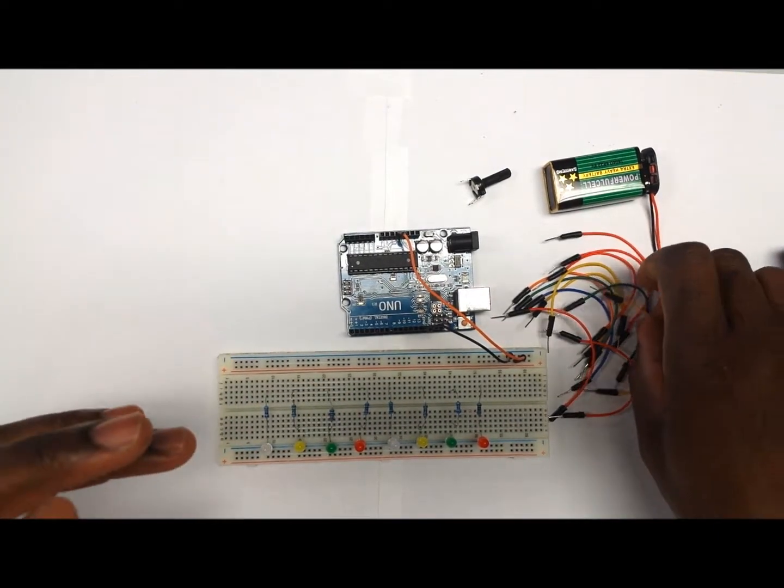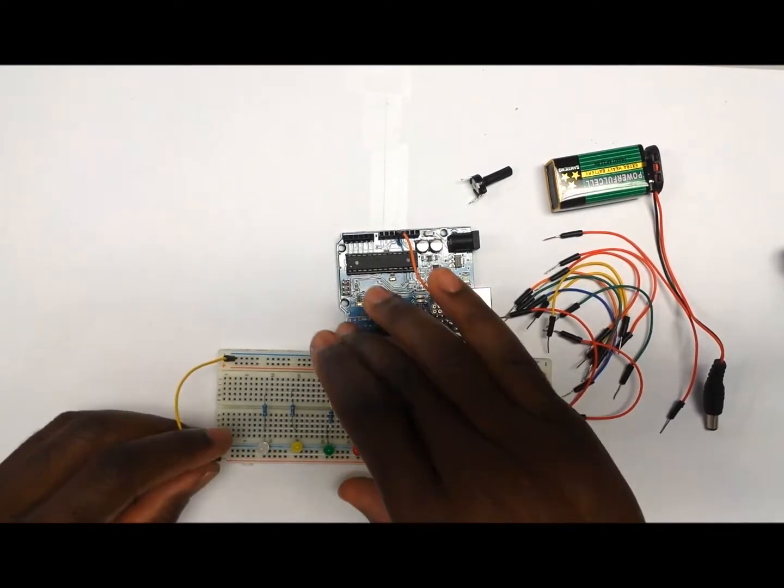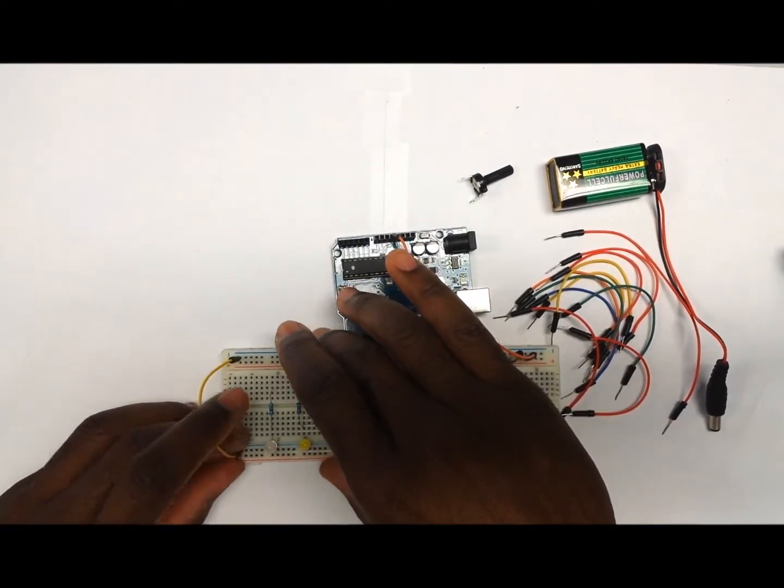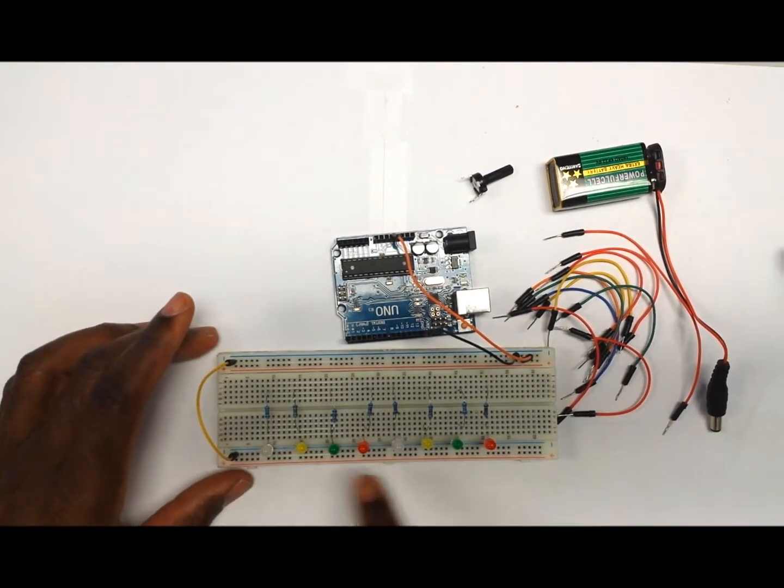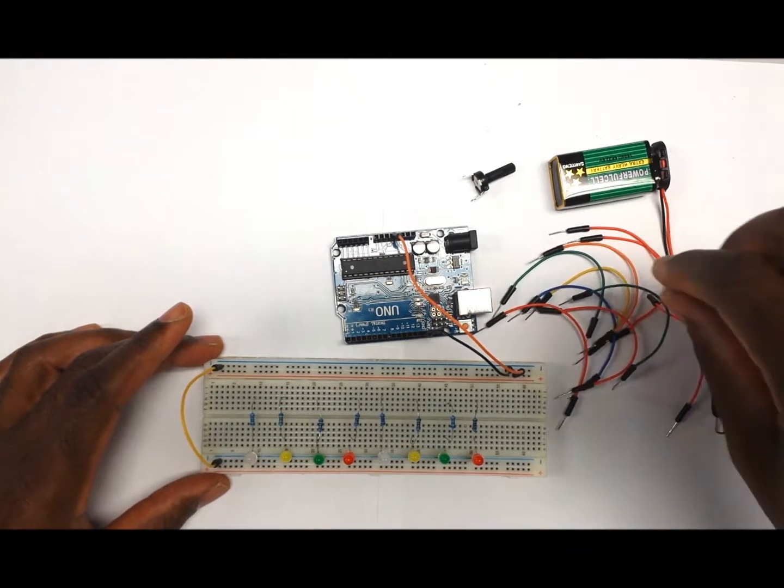We also want to have a wire that is coming from the negative rail of the breadboard across to the negative rail of the breadboard so that at least this will complete a complete circuit when we have attached it to the Arduino.